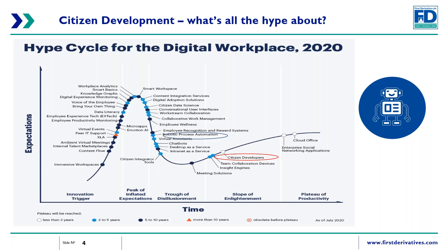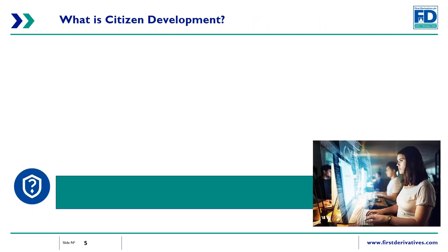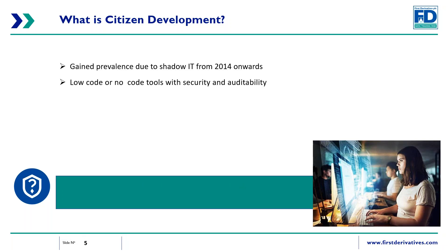We've got a practical example of how we deployed it and how we went about building out the relevant KPIs. Citizen development really gained prevalence due to the proliferation of shadow IT in organisations. It was a term coined back in 2014, and it's promoted as a way to reduce the reliance on shadow IT. Shadow IT, for us, is anything that can't be monitored or managed with full transparency by IT. We now have a 20 billion dollar market for no-code applications.